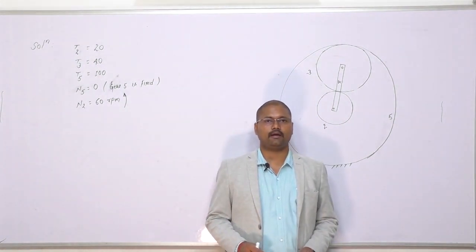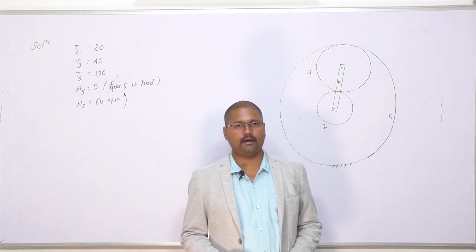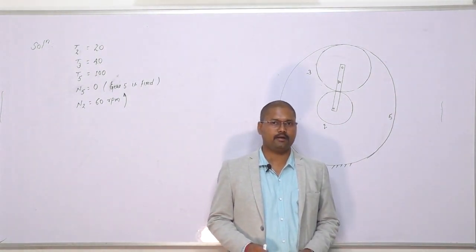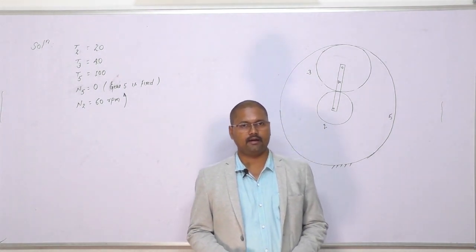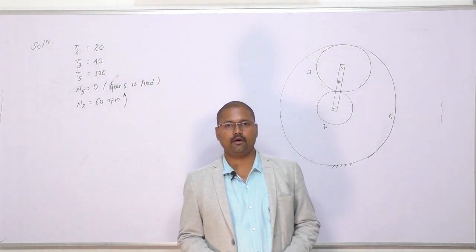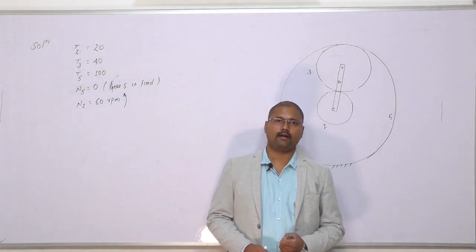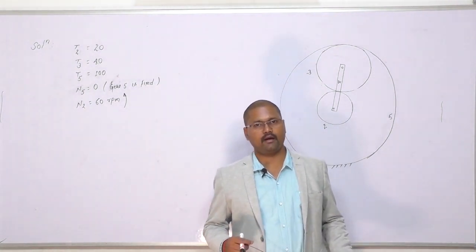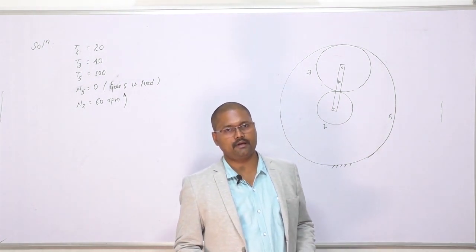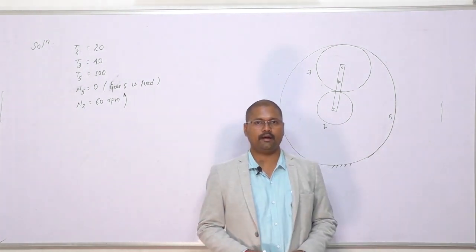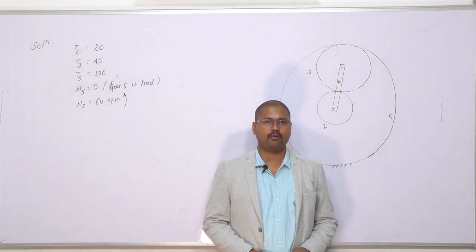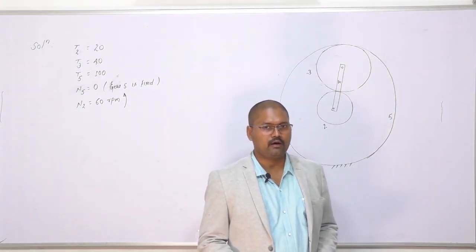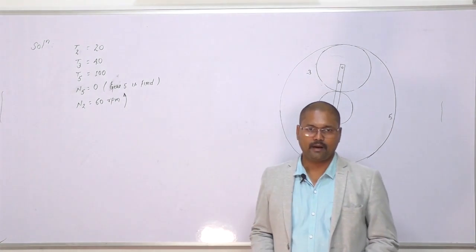An epicyclic gear train is shown schematically in the adjacent figure. The sun gear 2 on the input shaft is a 20-tooth external gear. The planet gear 3 is a 40-tooth external gear. The ring gear 5 is a 100-tooth internal gear. The ring gear 5 is fixed and gear 2 is rotating at 60 rpm counterclockwise. The arm 4 attached to the output shaft will rotate at what speed?